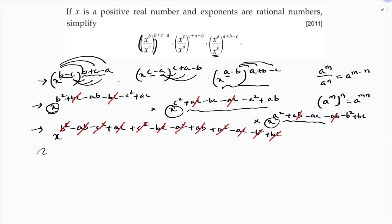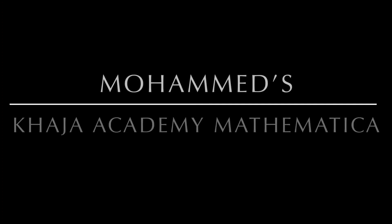So everything got cancelled. Here x power 0. And x power 0 equals 1.